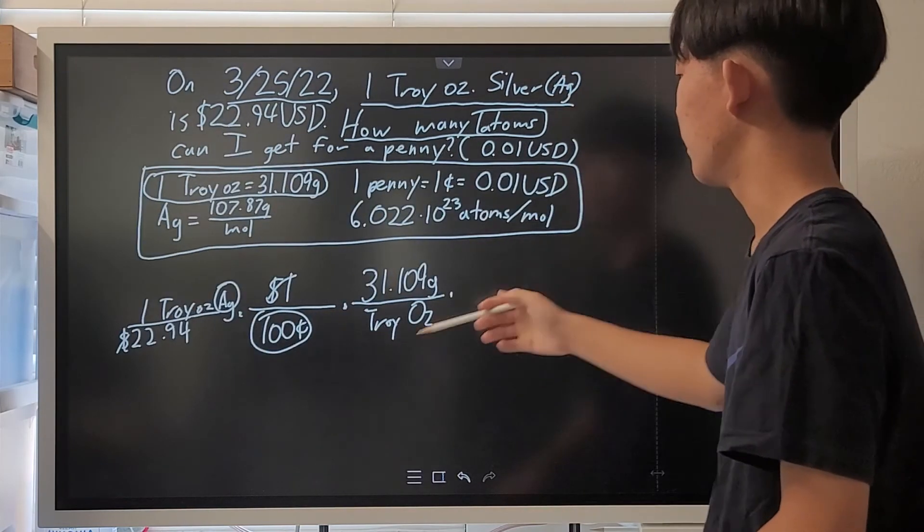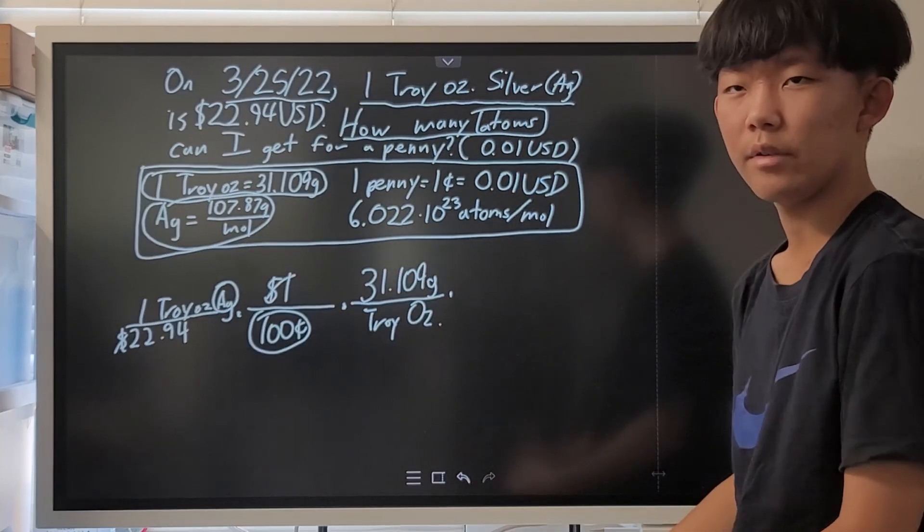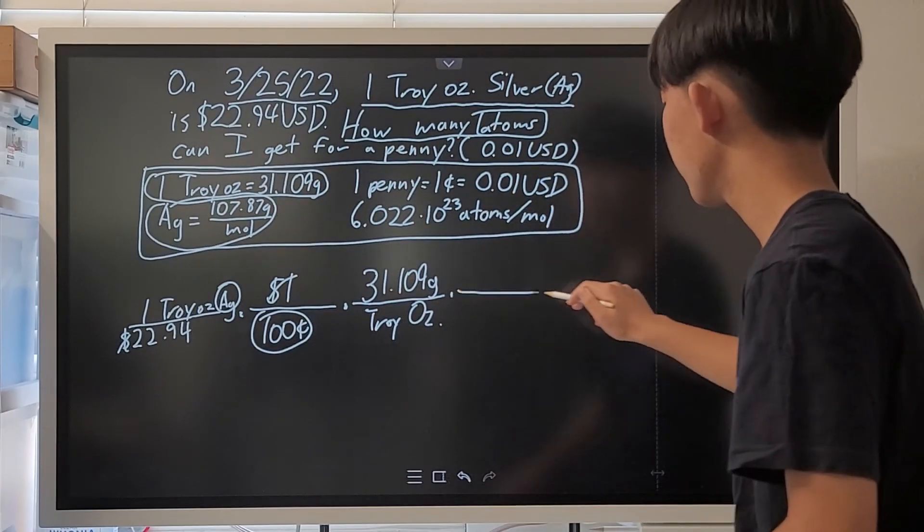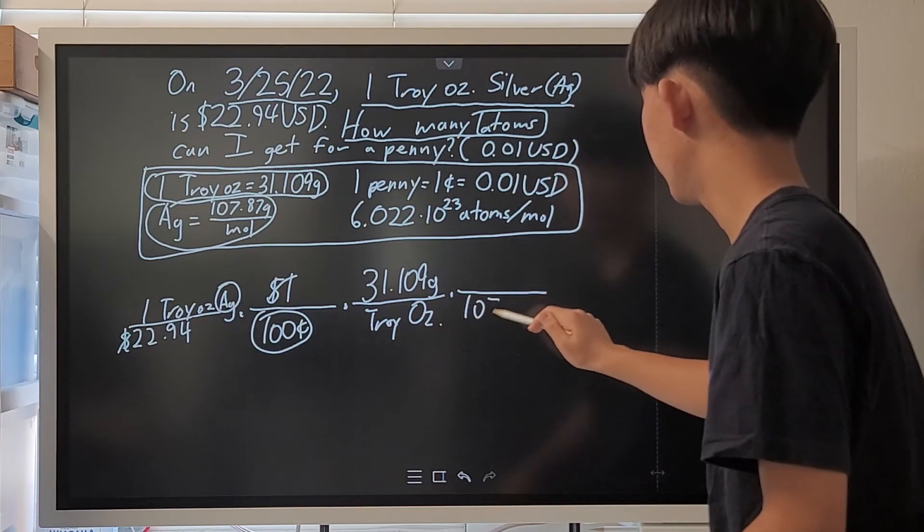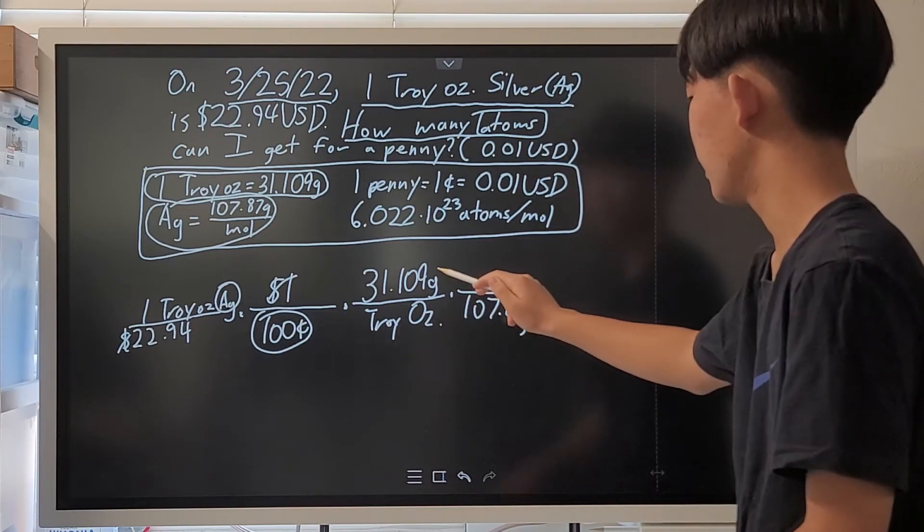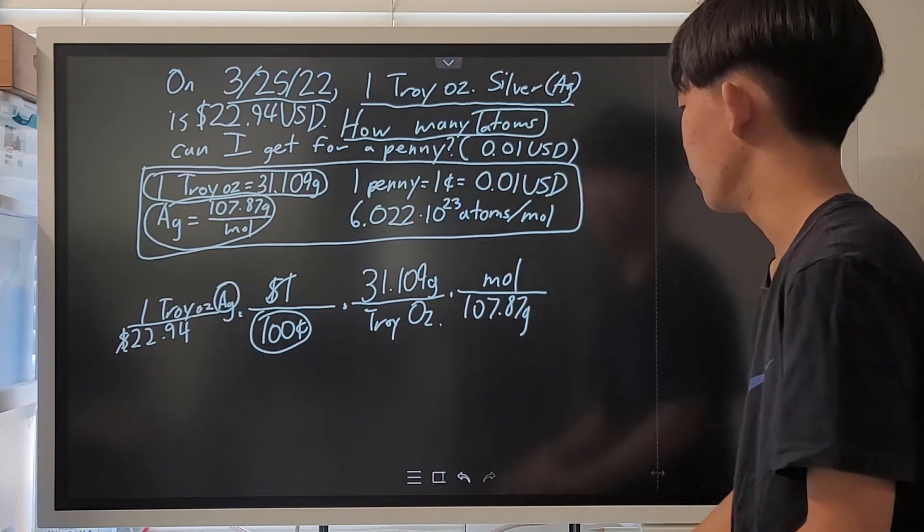And then, we have to convert the grams to moles. This is the molar mass of silver, and we have to multiply that. So, we get 107.8 grams in the denominator, right? Since grams are up here. On top of that, we put one mole.